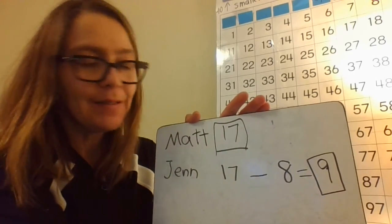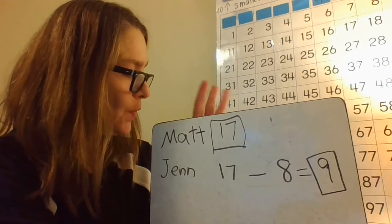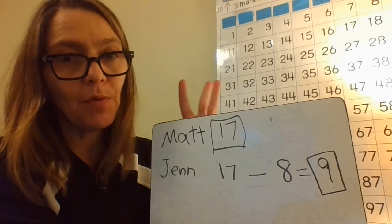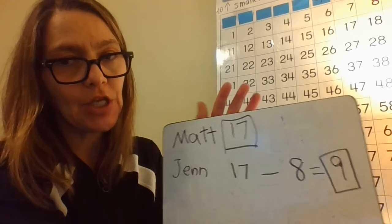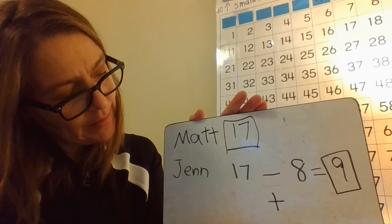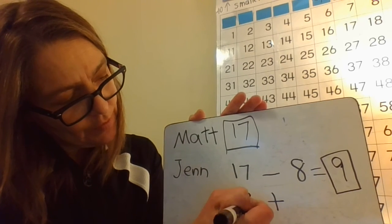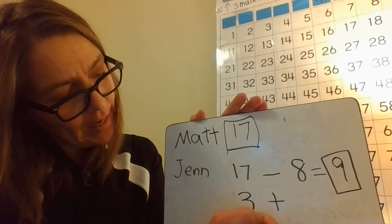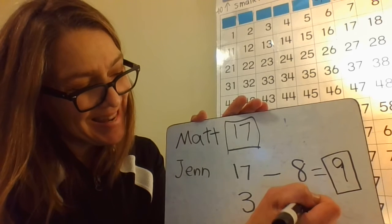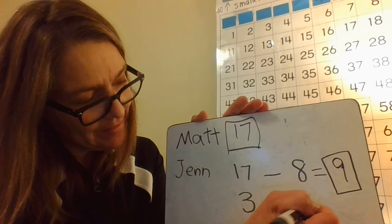But I'm not done yet, because the next part says Amy sold 3 more tickets than Jen. 'More' means this is going to be addition — a plus. So it's 3 more than the 9 that Jen sold. That gives us Amy's total.